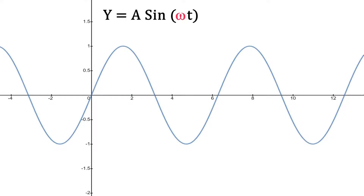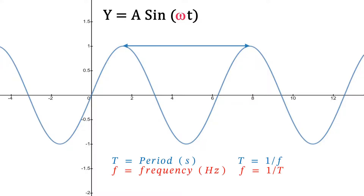Here we have the equation y equals a sine omega t, where omega is the angular velocity and t is time. So omega t gives us an angle in radians. T is the period in seconds and f is the frequency in hertz, and they are the reciprocal of each other.